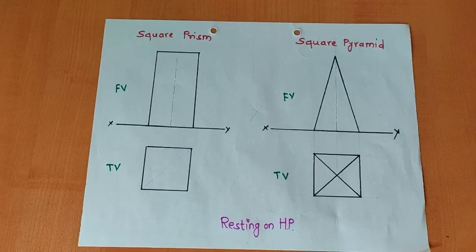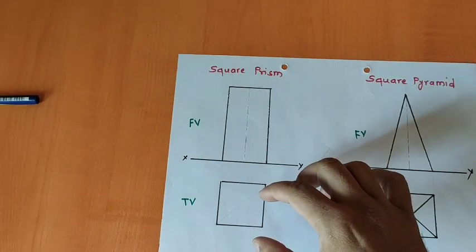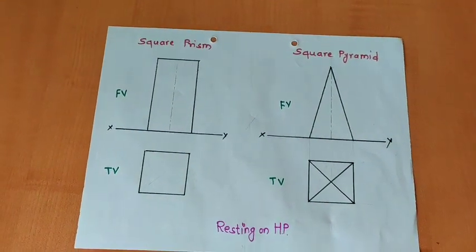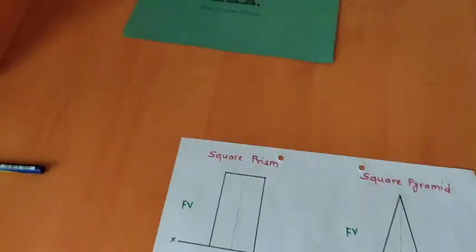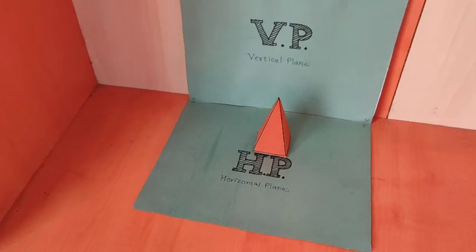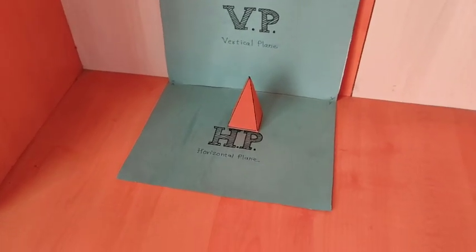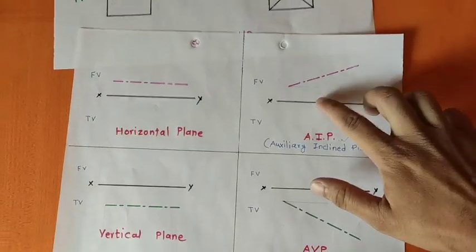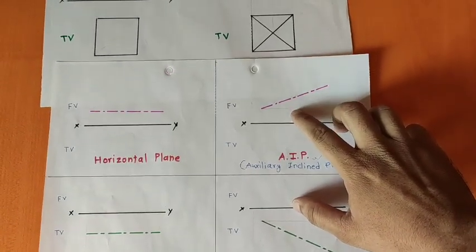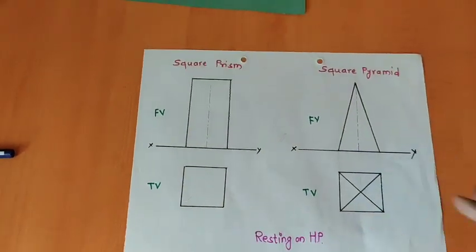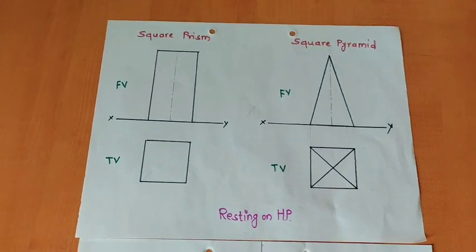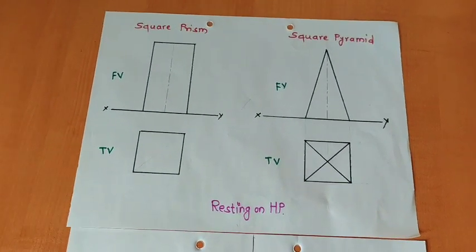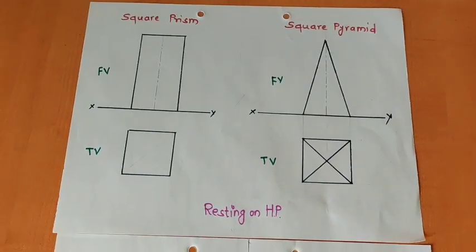I hope you have understood these basics. In today's lecture we covered: what is development of lateral surfaces, its different types of development, the auxiliary inclined plane (AIP) — plane inclined to HP — which is in our syllabus, and the resting on HP condition. I hope you have understood these things. Please like the video and subscribe the channel. Thank you very much.